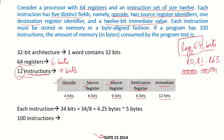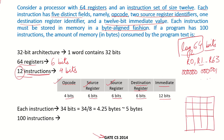Each instruction must be stored in memory in a byte-aligned fashion. That means each instruction stored in memory cannot start from the middle of a byte — the bytes have to be aligned. Adding up the fields: 4 + 6 + 6 + 6 + 12 results in 34 bits. So each instruction requires 34 bits.